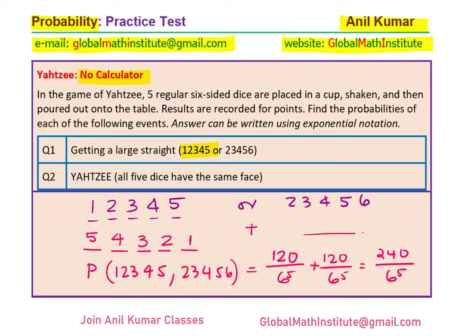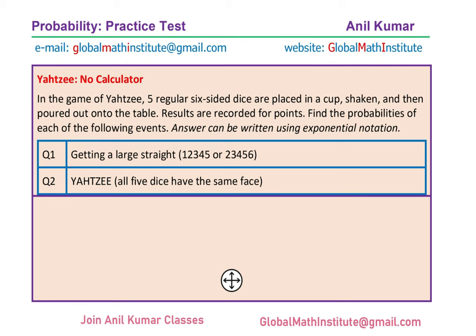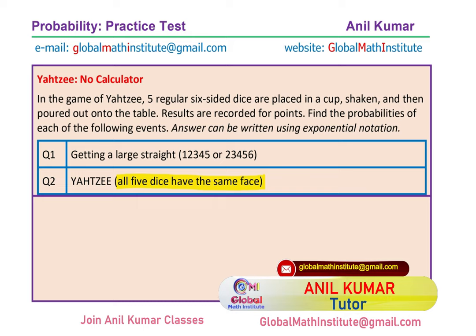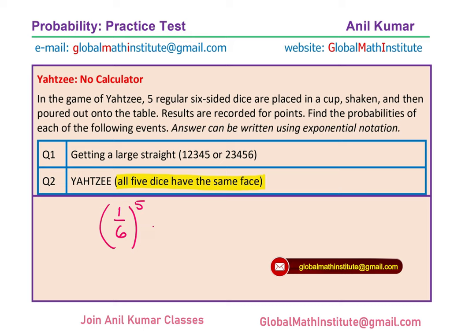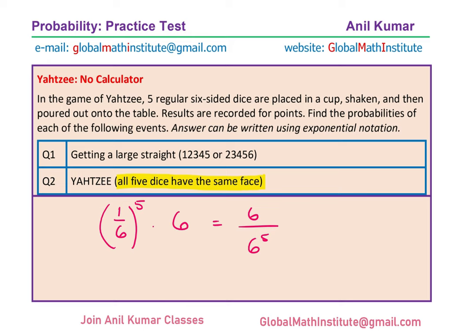Now let's look into the second part, which is how do we get Yahtzee. That means we are looking for all 5 dice to have the same face. For example, we could get all five showing a 6. That is 1 out of 6 for each die, and since all 5 must match, we multiply. But there are 6 faces, so there are 6 ways of getting it. What you get is 6 over 6 to the power of 5, or 1 over 6 to the power of 4, as your solution.